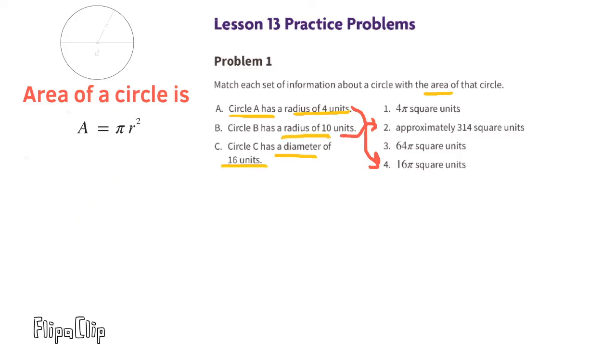C. Circle C has a diameter of 16 units. That means the radius is 8, since the radius is half the diameter, and half of 16 is 8. The area of circle C is pi times 8 squared, or pi times 64. Circle C matches with number 3, 64 times pi square units.